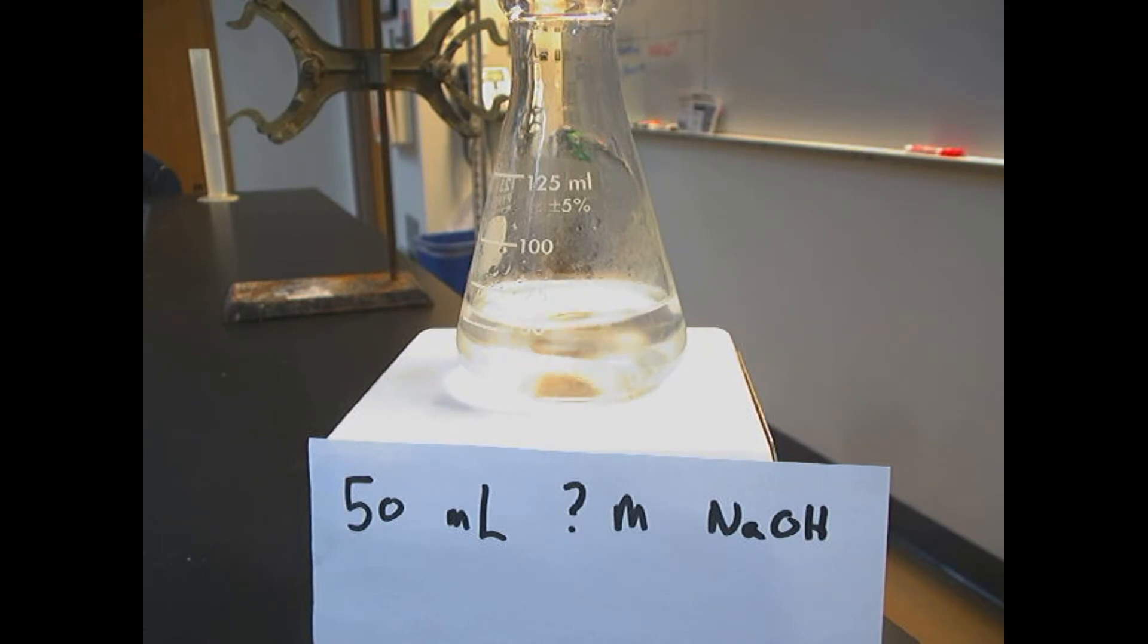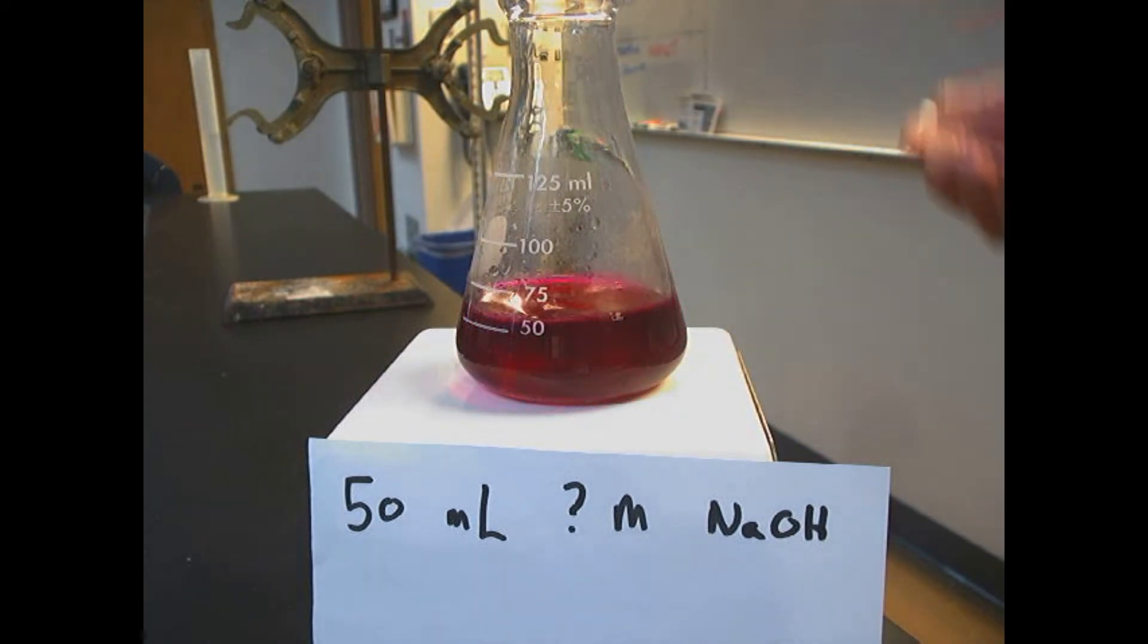We are going to bring this to neutralization. Here's what this means. We're going to add some phenolphthalein to turn it pink. Now that it is a deep, bright pink, we're going to add our acid of known concentration until this just turns back to clear. When that happens, we know we have exactly the same amount of acid in solution as base.